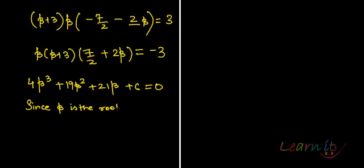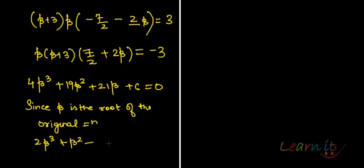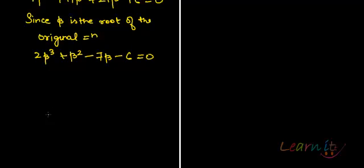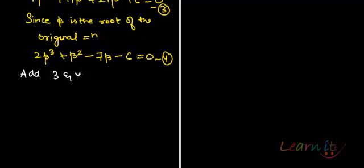Since beta is the root of the original equation, we can substitute it into the original equation to get 2 beta cubed plus beta squared minus 7 beta minus 6 equals 0. Now using these two equations — equation 3 and equation 4 — let's add them up. Adding 3 and 4 we get 6 beta cubed plus 20 beta squared plus 14 beta equals 0.